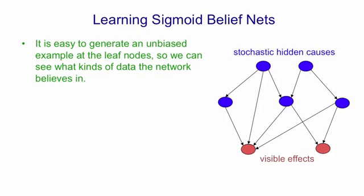Now I'm going to talk about why it's difficult to learn sigmoid belief nets. As we've seen, it's easy to generate an unbiased sample once you've done the learning. That is, once we've decided on the weights in the network, we can easily see the kinds of things the network believes in by generating samples from its model. This is done top-down, one layer at a time.